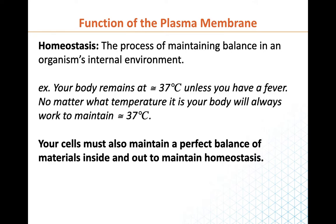One example of homeostasis that you can probably all relate to in your everyday life is that the human body needs to remain at around 37 degrees Celsius. It doesn't matter if it's 40 degrees Celsius outside or if it's 10 degrees Celsius outside — your body has to stay at this temperature all the time because vital functions in your body require this temperature so that they can keep going.